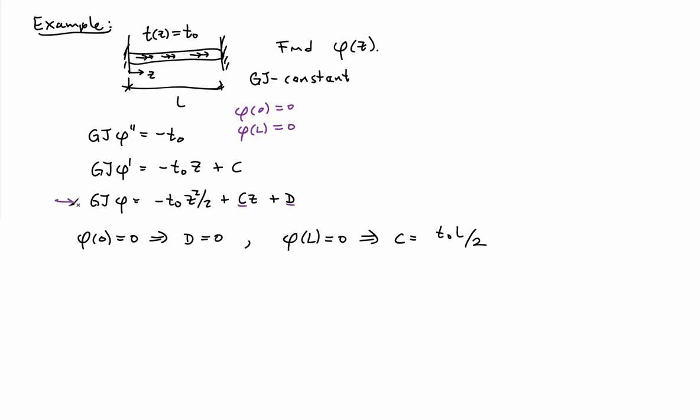I can plug those two values back into my expression and solve for phi. I find phi of Z equals T0 L squared over 2Gj times Z over L times 1 minus Z over L. I've factored the result a little bit.